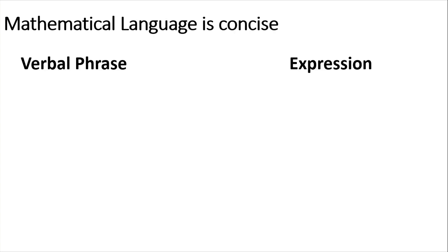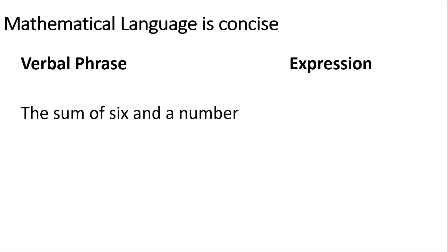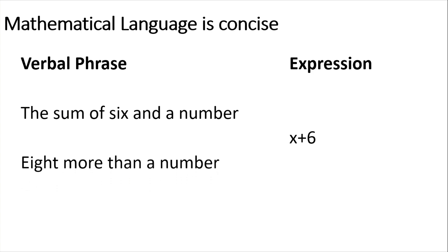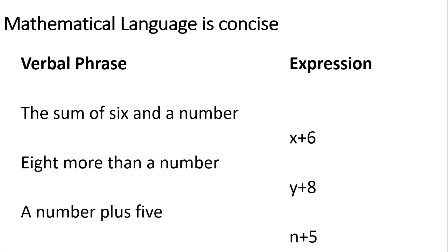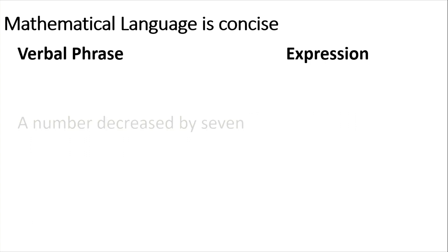Mathematical language is concise because we can write phrases in a simple expression. For example, 'the sum of 6 and a number' can be written as x plus 6, or 6 plus x — when we say 'a number,' you can choose any variable. '8 more than a number' is y plus 8, or 8 plus y. 'A number plus 5' — choosing n as the variable — is n plus 5.